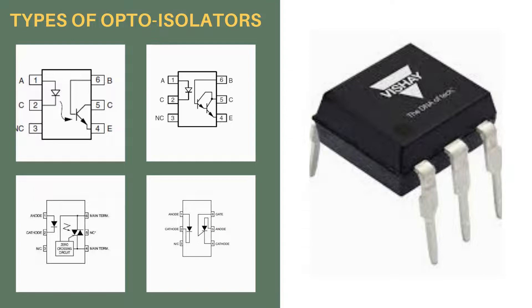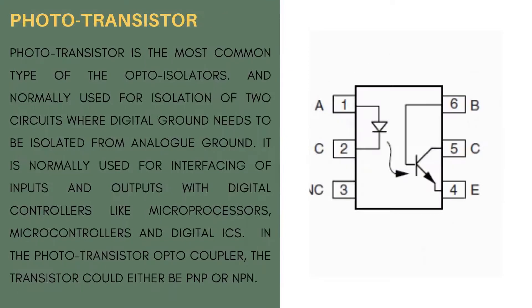Opto-coupler or opto-isolators can be broadly divided into four main types. Photo-transistor is the most common type of the opto-isolators and normally used for isolation of two circuits where digital ground needs to be isolated from analog ground. It is normally used for interfacing of inputs and outputs with digital controllers like microprocessors, microcontrollers and digital ICs.